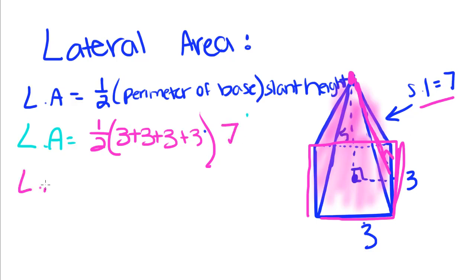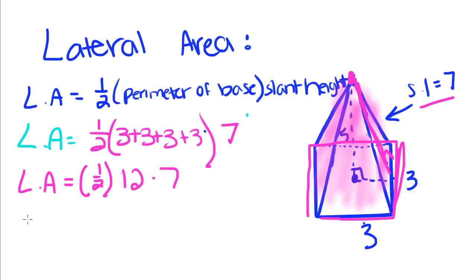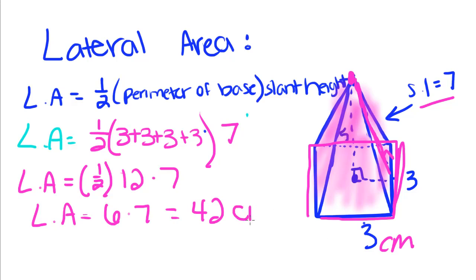So our lateral area equals one-half times the perimeter of the base — which is three plus three plus three plus three, equaling twelve — times the slant height of seven. One-half of twelve is six, and six times seven is forty-two. So if this said centimeters, this would be forty-two centimeters squared, because when we talk about area, we're always in a two-dimensional measure.